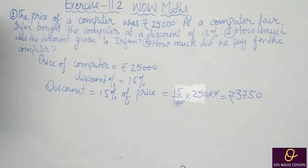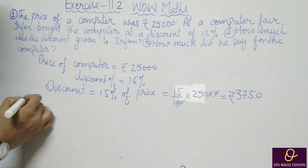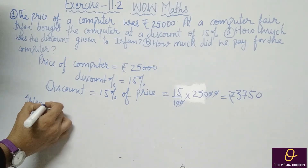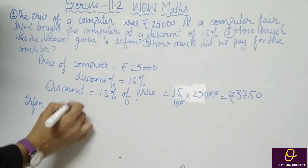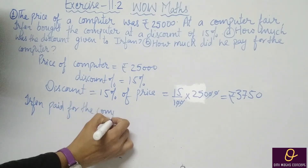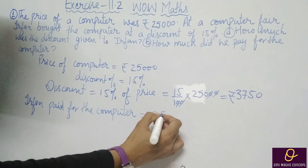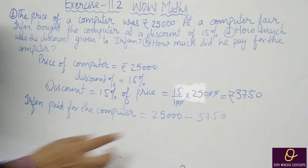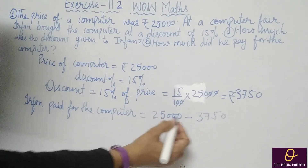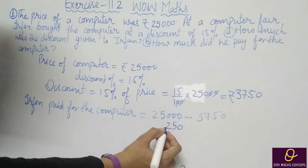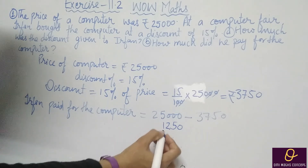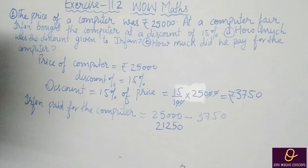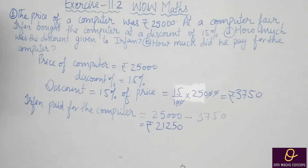Discount is Rs. 3,750. Now we have to find out how much Irfan paid for the computer — that equals 25,000 minus 3,750. Subtracting: 0, 10 minus 5 is 5, 9 minus 7 is 2, 3 minus 2 is 1, giving us Rs. 21,250. This is the amount which Irfan will pay for the computer.